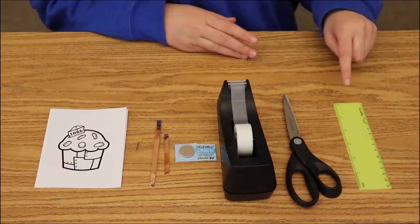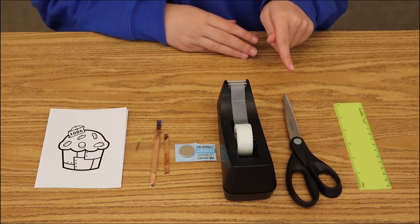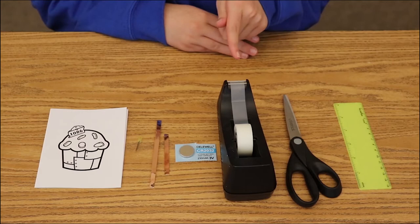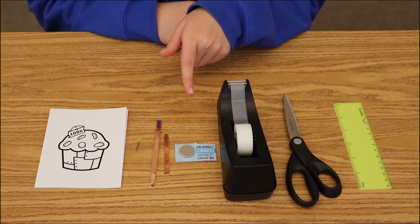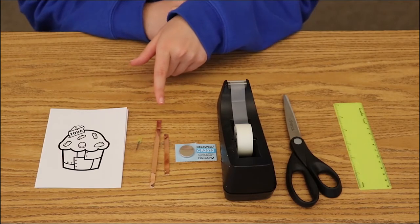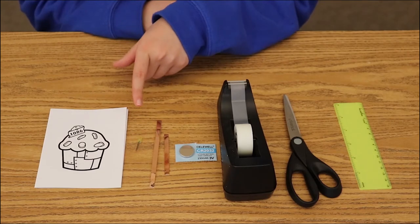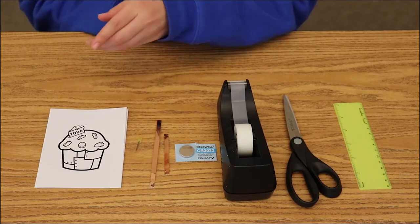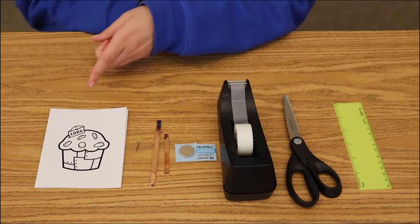You will need a ruler, scissors, scotch tape, a CR2032 battery, 6mm copper tape, a 5mm LED light, and the circuit card template of your choice, which can be found in the video description.